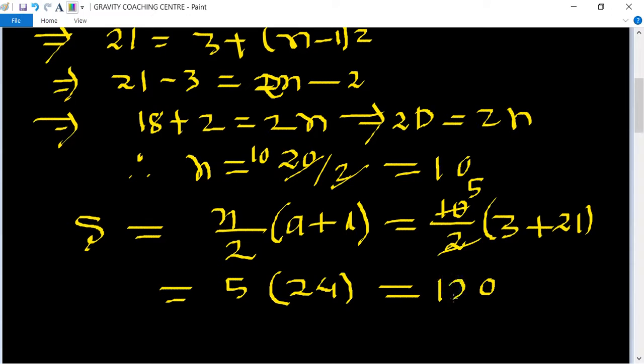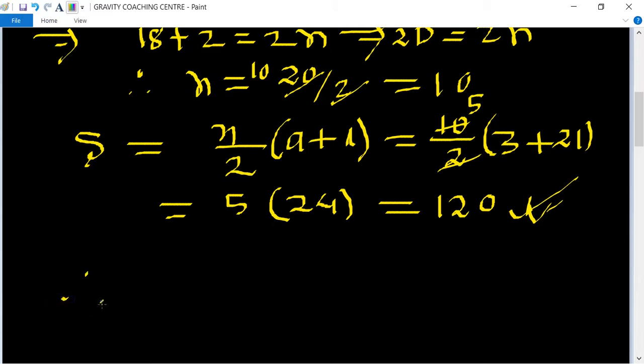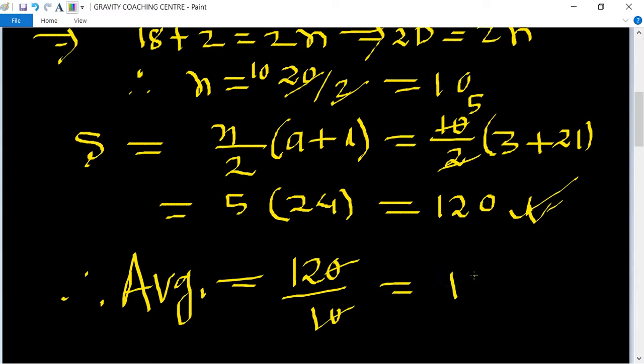which equals 120. This is the total sum. To find the average: average = sum/number of terms = 120/10 = 12, which is the required answer.